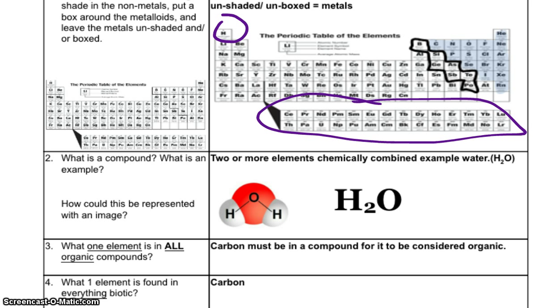Number 2. What's a compound? What's an example? And how can we represent it by an image? Well, we've got H2O right here. And we've got one atom of oxygen, two atoms of hydrogen. So you can see that the little subscript 2 represents the two atoms of hydrogen. And then no subscript next to the O, that's oxygen, means that there's only one atom of oxygen.